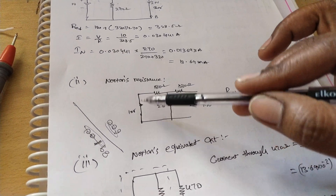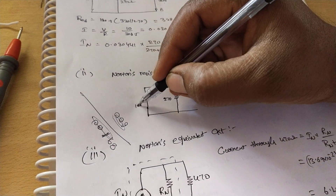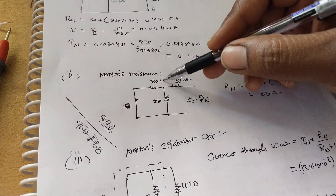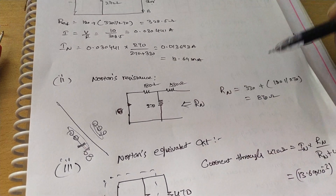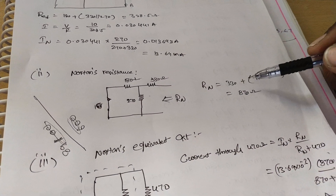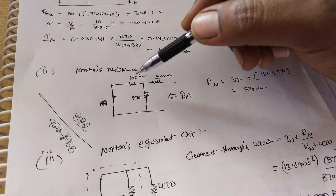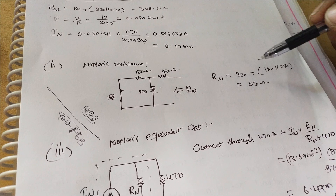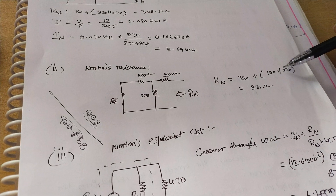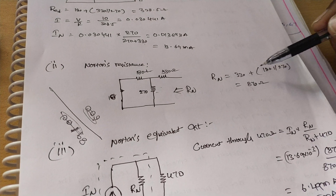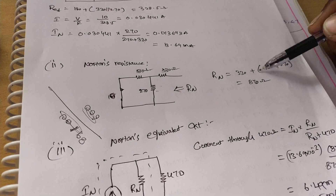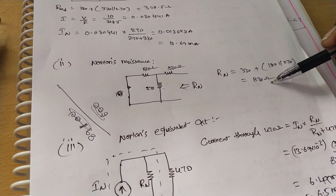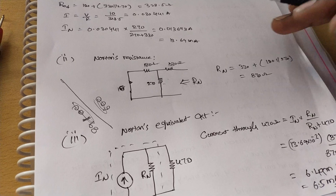By short-circuiting the 10 volt source (0 volts), we have 270 ohm, 180 ohm, and 330 ohm remaining. Rn equals: 270 and 180 in parallel, and that parallel combination in series with 330 ohm, giving Rn = 870 ohm.